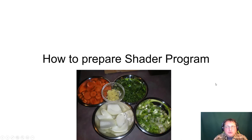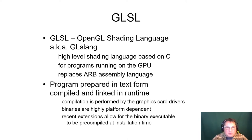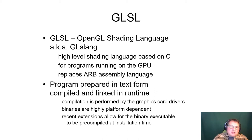Moving on to the final part of this first lecture — how to prepare a shader program. First, you have to write the shader program in GLSL. We'll look at GLSL as a language in the next separately recorded part of this lecture. GLSL — also known as GLSLang — is a high-level shading language based on C for programming on the GPU. It replaces the previous ARB assembly language. You're lucky — you don't have to program your shaders in assembly language anymore. My first shader was written in assembly language and it was absolutely difficult, terrible, and confusing.